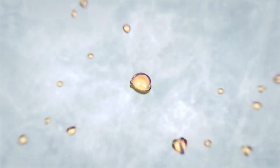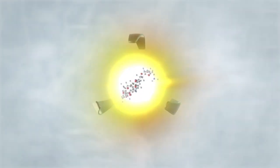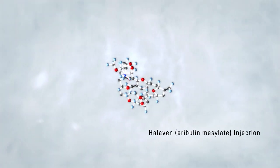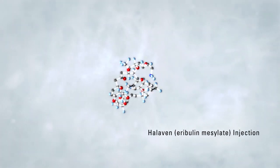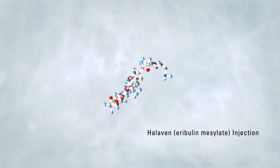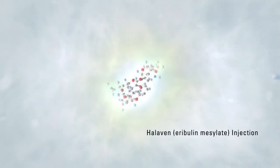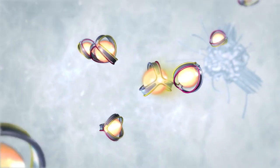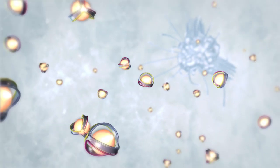Inspired by the naturally occurring product Halichondrin B and developed by Eisai, Halaven Eribulin Mesylate Injection is the first agent in the Halichondrin class. It is a non-taxane chemotherapy agent with a distinct binding profile.